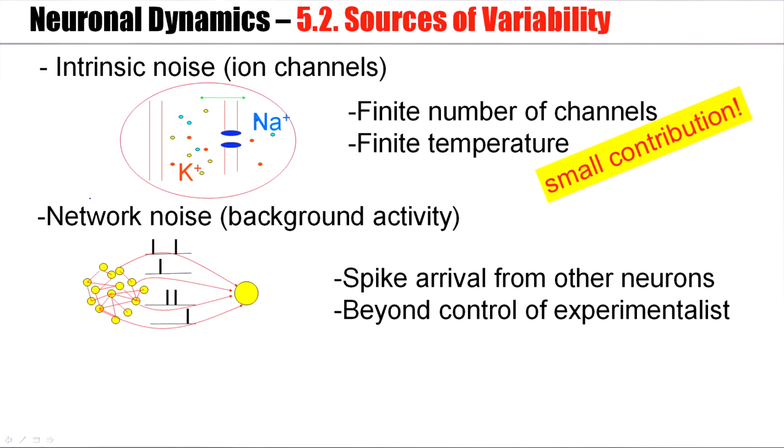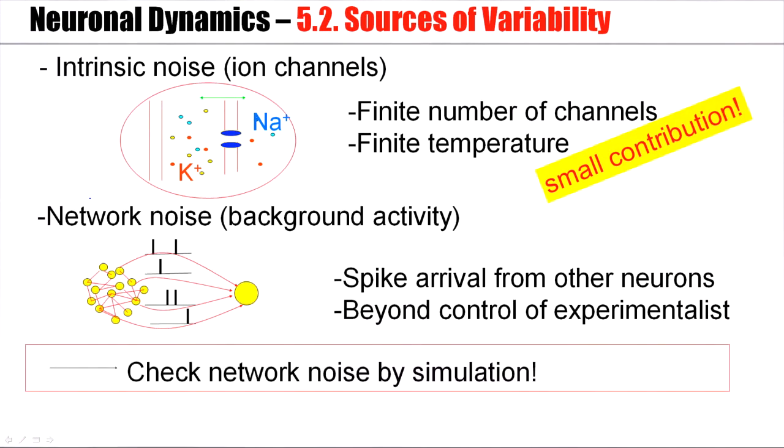Now, the fluctuating current represents what the neuron is expected to see when it's embedded in the brain network. A neuron inside the brain is not going to be stimulated naturally by a step current, but rather by some kind of fluctuating current, or more precisely a fluctuating conductance. So we can exclude a big contribution from intrinsic noise. But then the question is, is this image of a network noise really realistic? And we can check this by simulations.